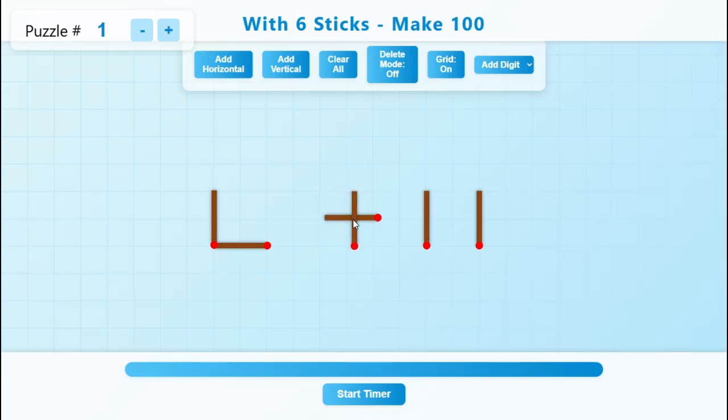And this matchstick we will make plus, and then we will move this matchstick and we will keep it here. So this becomes L plus L. So L in Roman numerals is 50, which is L plus L, which is 50 plus 50, which is equal to 100. So we have solved this puzzle.